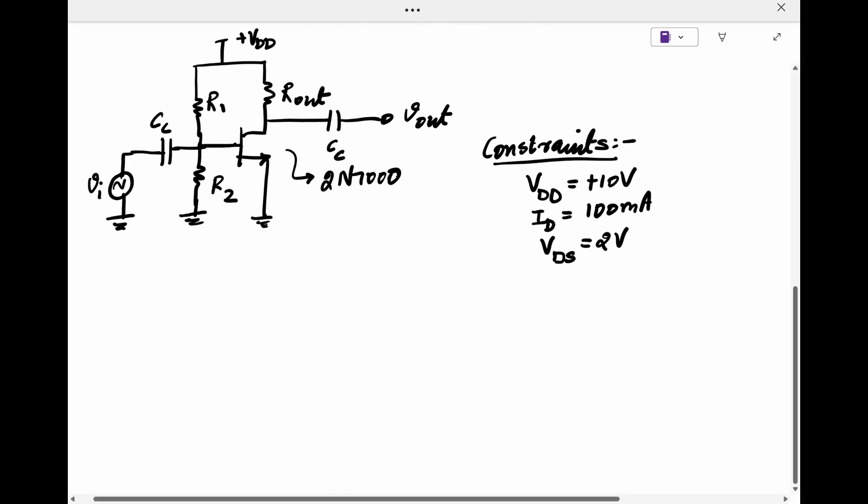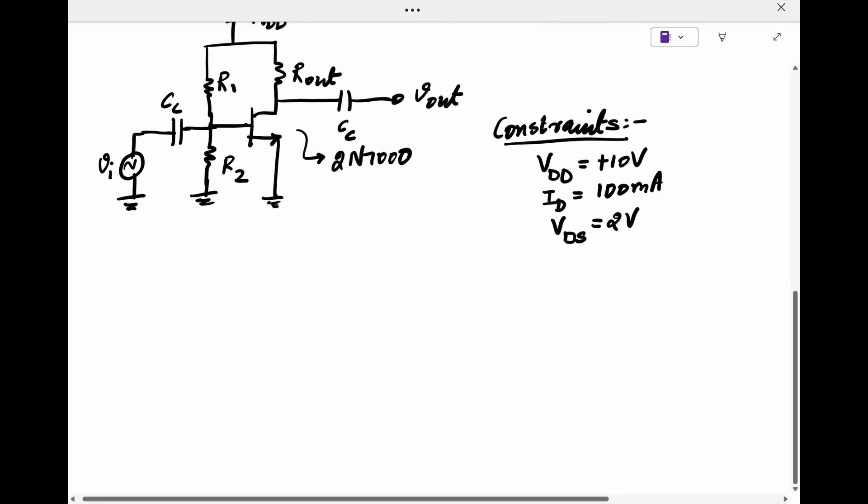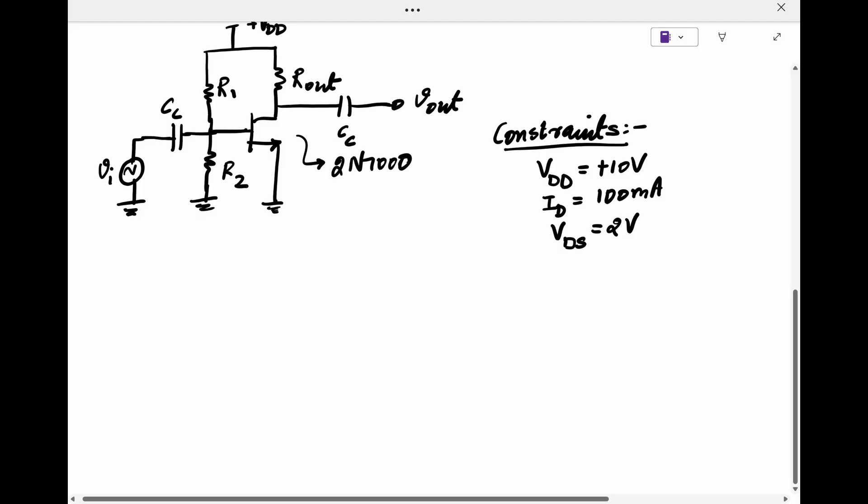R1 and R2 are the biasing resistors that provide the gate to source voltage, and C sub C is the coupling capacitor for the input voltage signal from the sensor denoted by Vi.